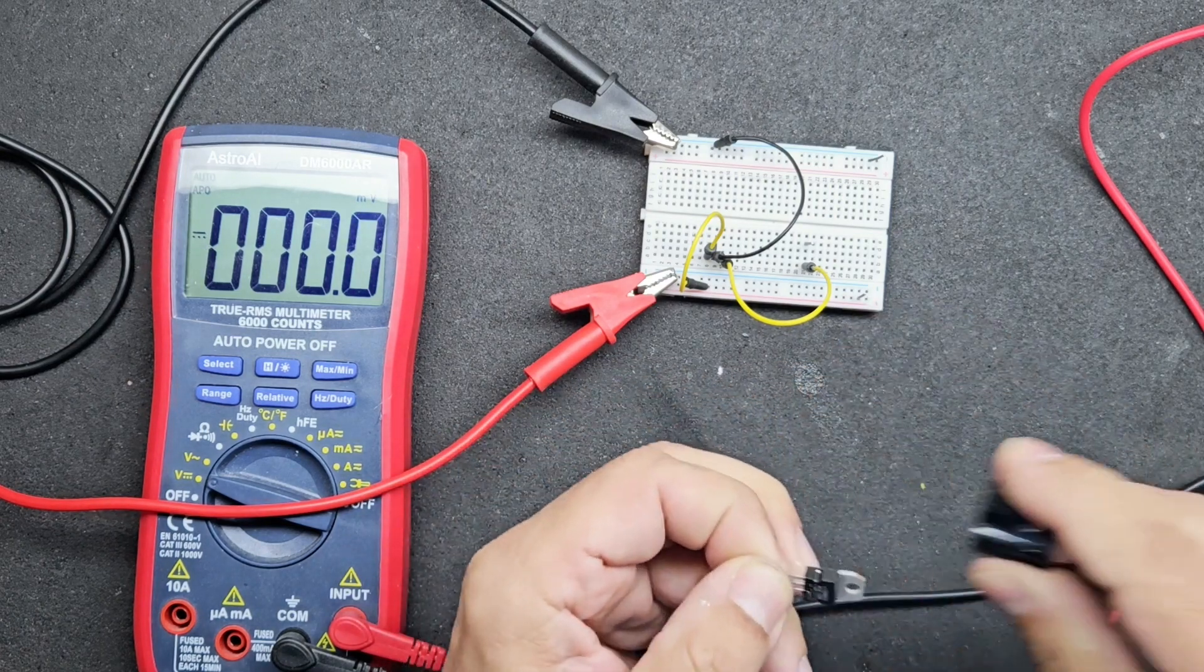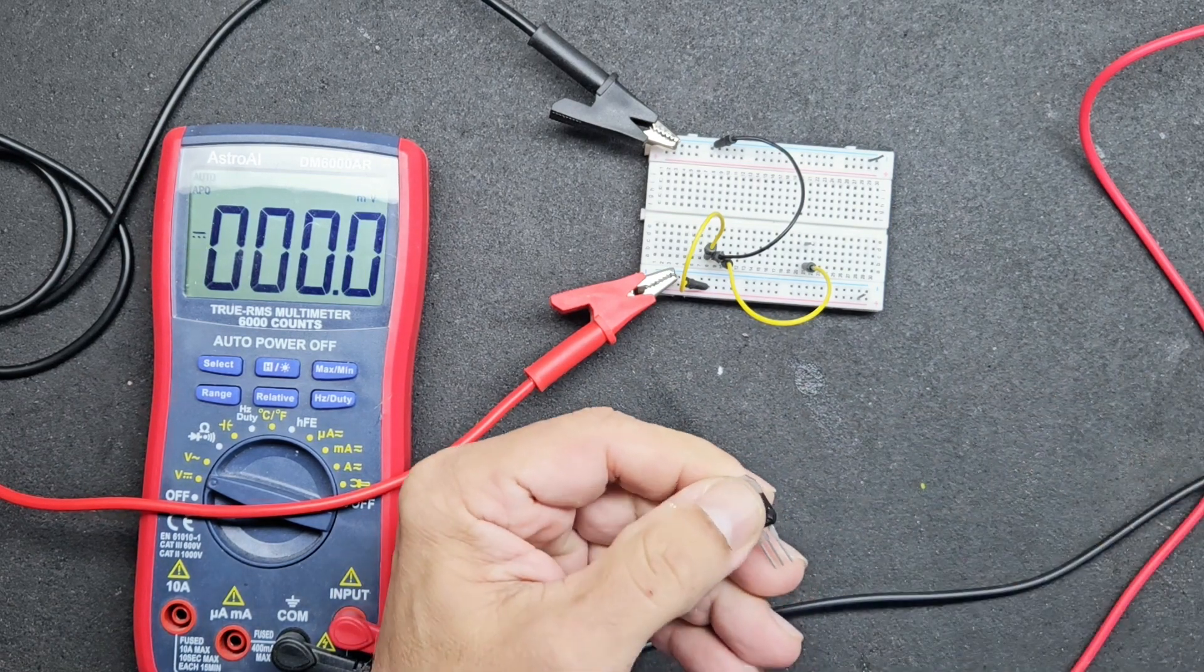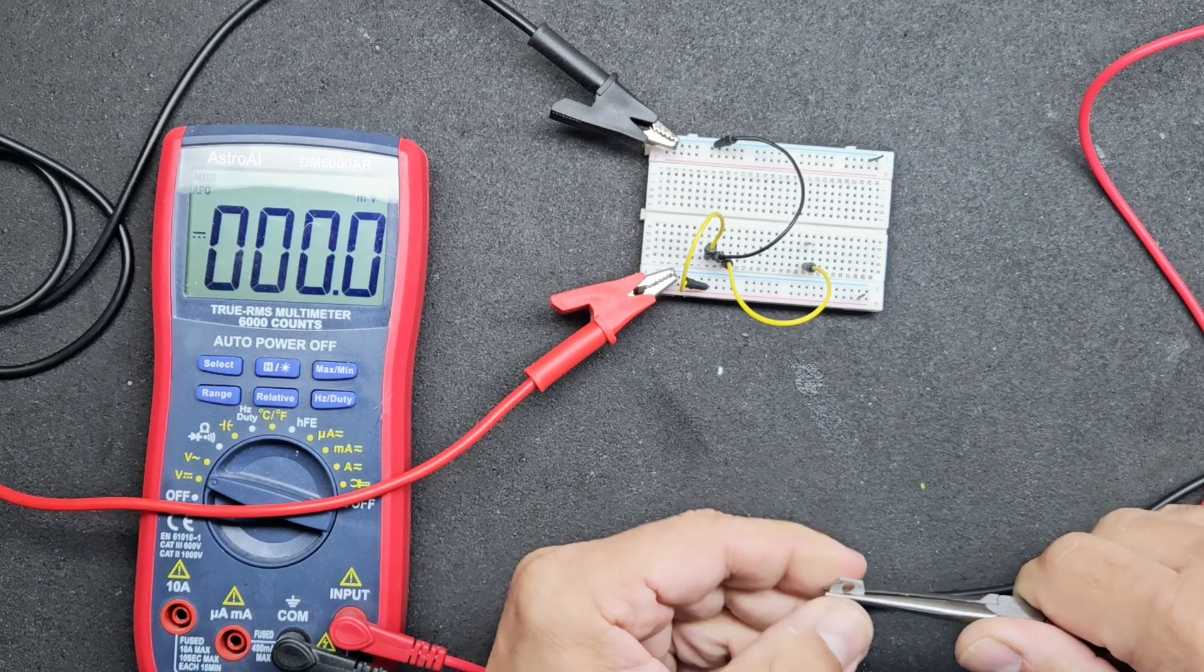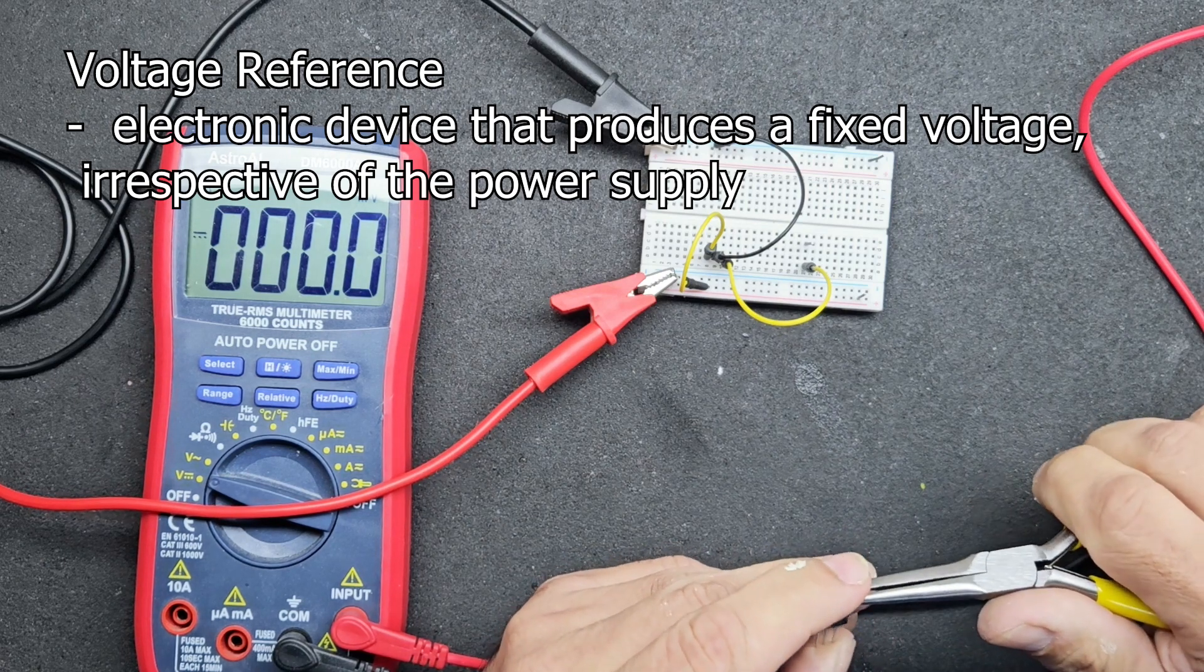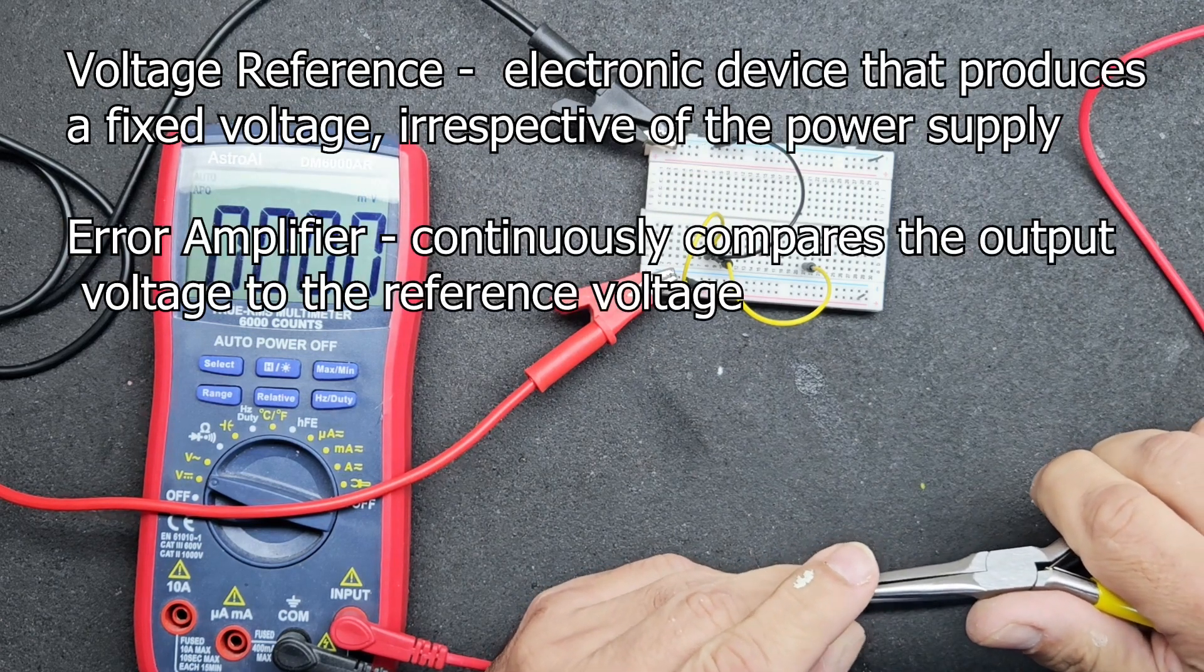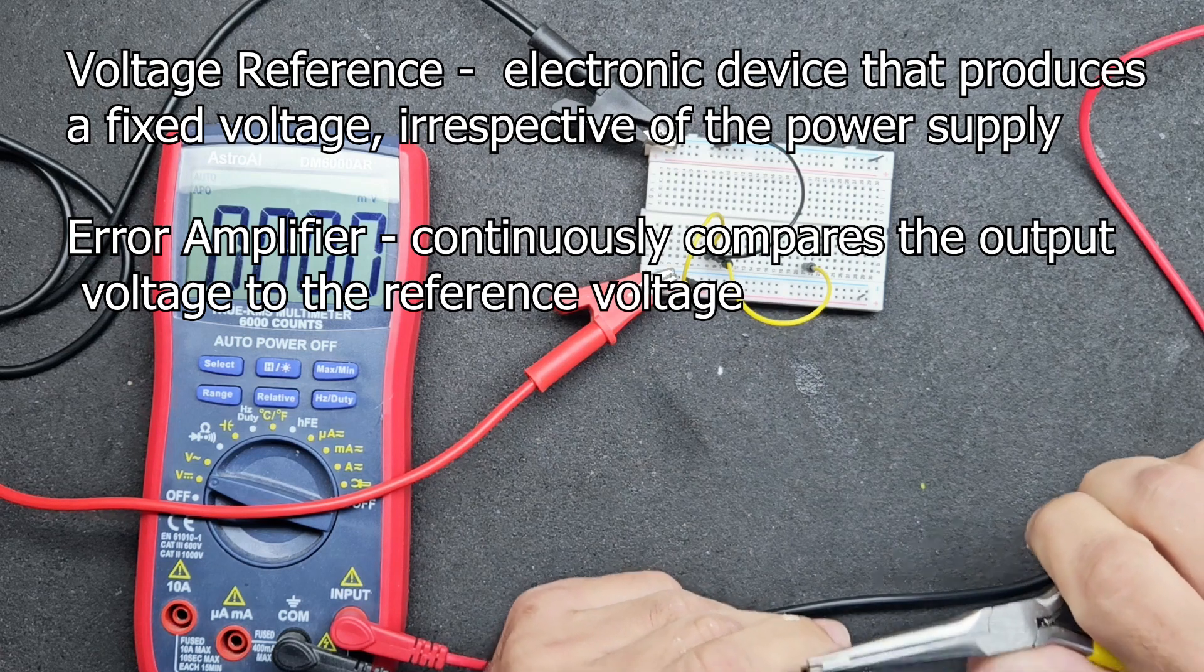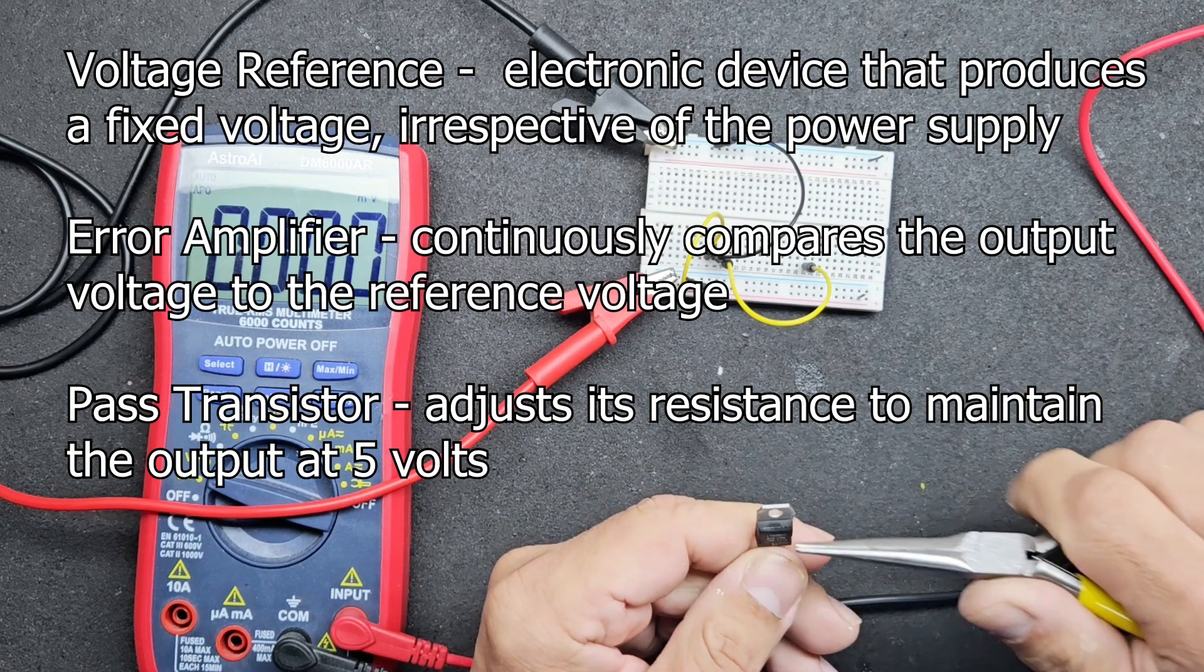Now let's take a look at the inner workings of the 7805. There are three main components inside this small package: a voltage reference, an error amplifier, and a pass transistor. The voltage reference produces a fixed voltage irrespective of the power. The error amplifier continuously compares the output voltage such as the 5 volts in this unit versus the reference voltage. The pass transistor adjusts its internal resistance to maintain the output at 5 volts.